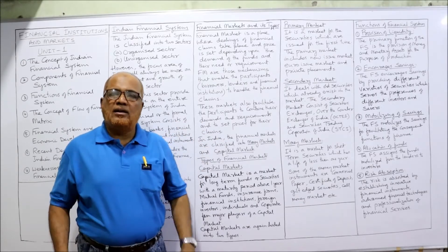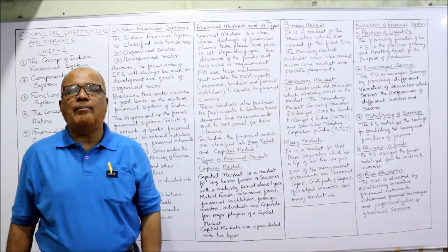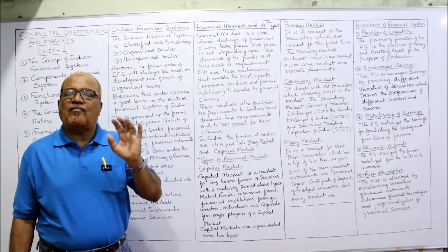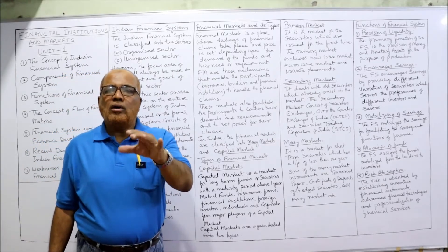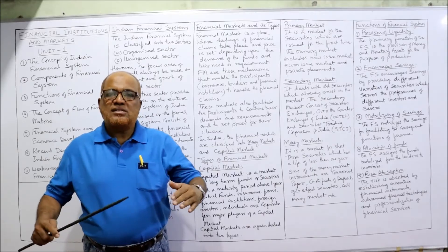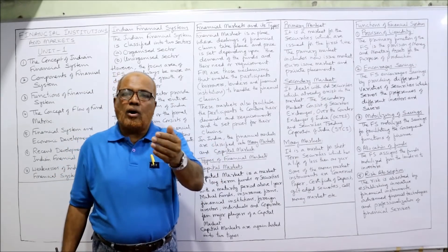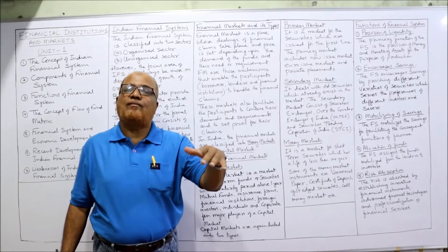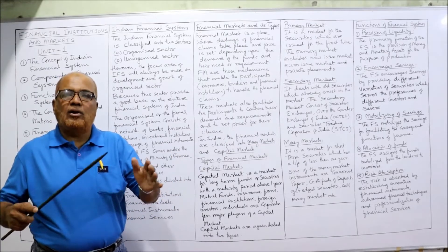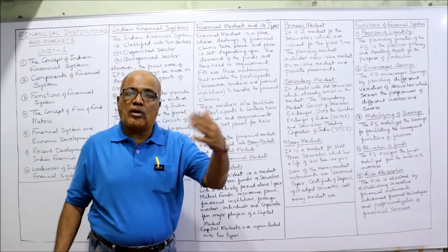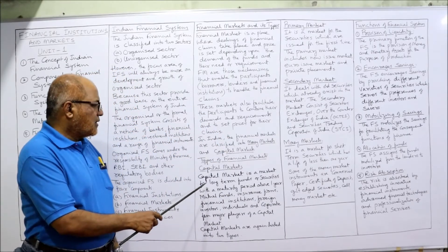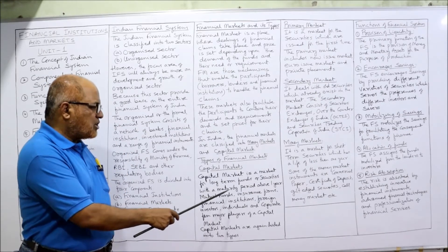In India, financial markets are classified into two categories: capital market and money market. Capital market is a segment of the financial market concerned with long-term borrowing and lending of funds — long-term meaning more than one year. In the capital market, borrowers and lenders come together to deal with transactions of borrowing and lending for more than one year. Long-term funds are dealt in capital markets — it is a market for securities with a maturity period of above one year.